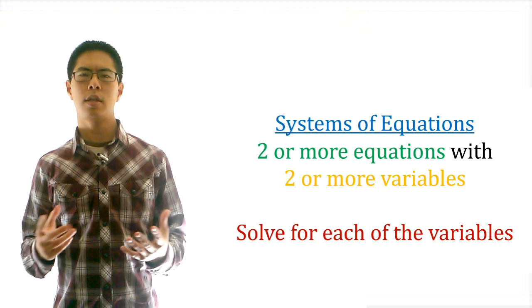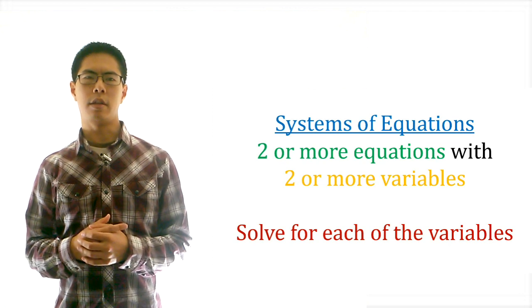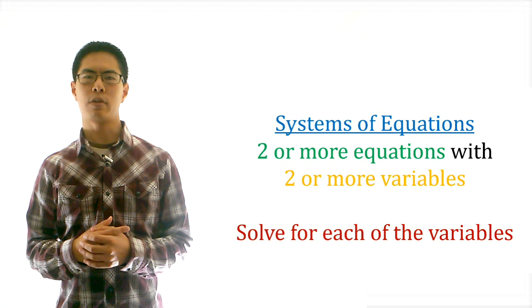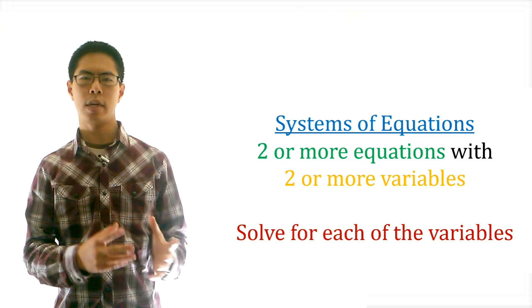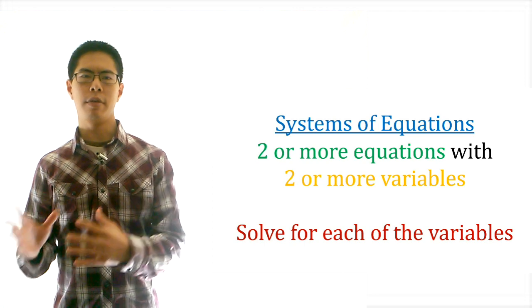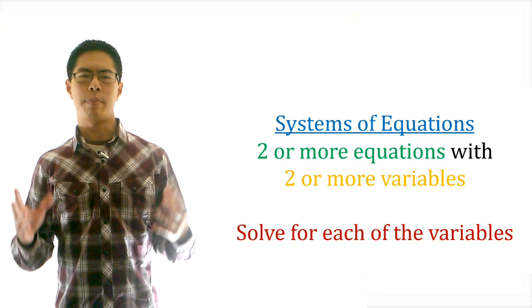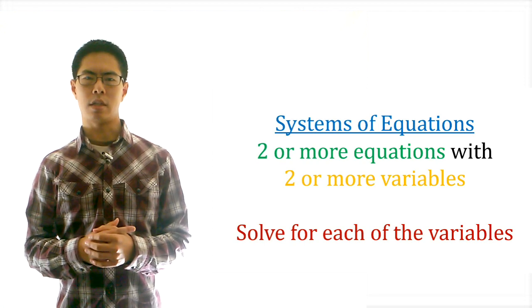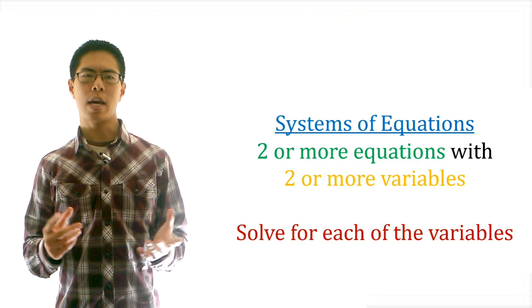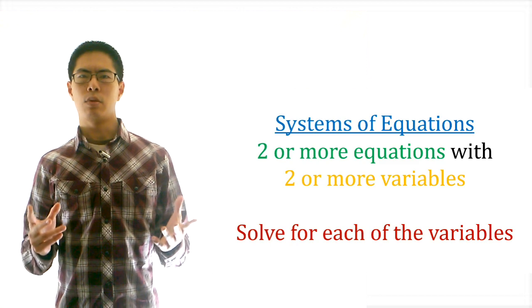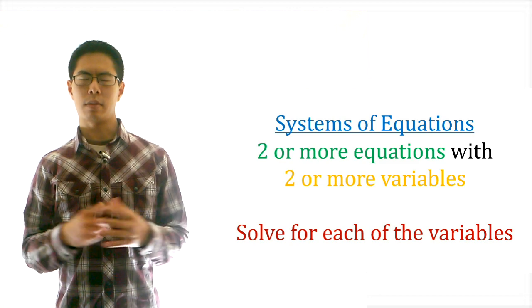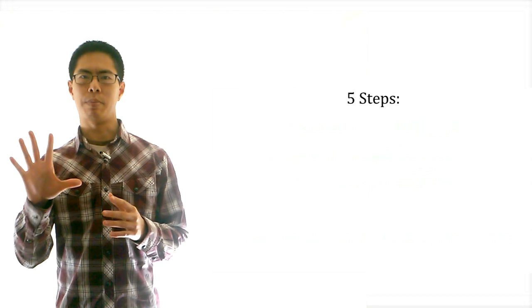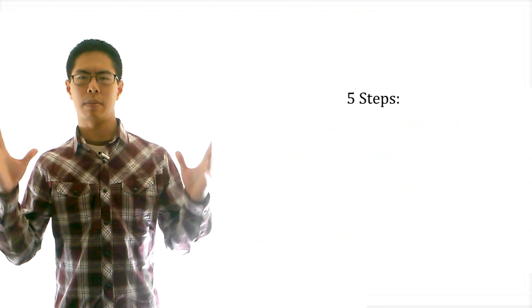To use the elimination method to solve a system of equations with two equations and two variables, we basically need to manipulate the equations so that when we add them together, we get rid of one of the variables. We're going to do this by following five simple steps.